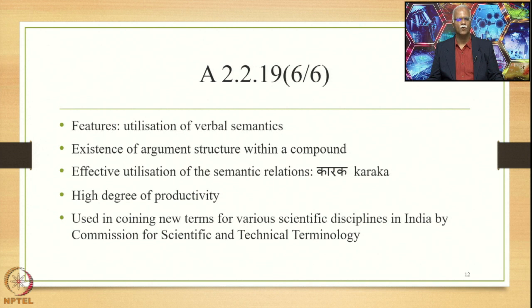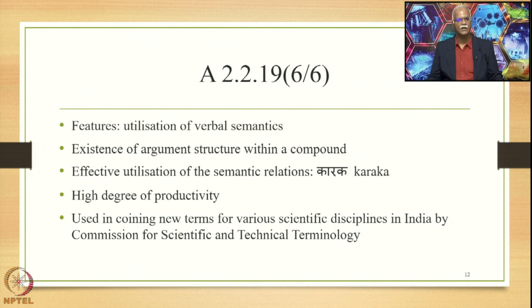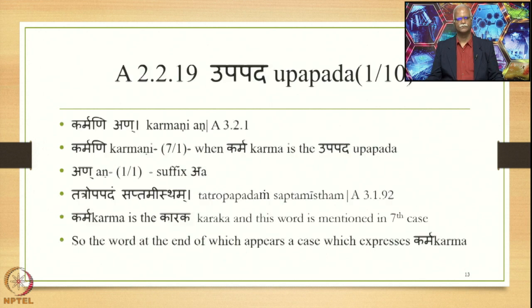The features of Upapada Tatpurusha Samasa are: utilization of verbal semantics — the arguments of the verbs get compounded with the Kridanta forms — existence of argument structure within a compound, effective utilization of semantic relations, the Karaka relations, and also a high degree of productivity. Therefore it is used in coining new terms for various scientific disciplines in India by the Commission for Scientific and Technical Terminology.